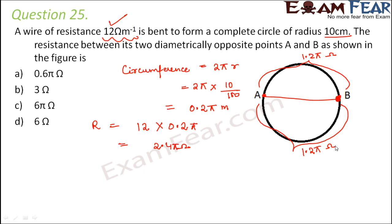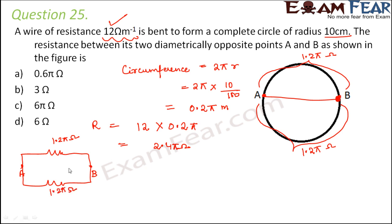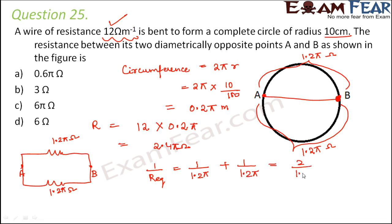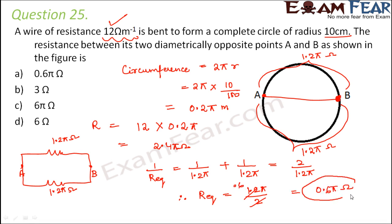The resistance of each half is 1.2π ohms. To calculate the equivalent resistance between A and B, we make a simple circuit: point A and point B with one resistance of 1.2π ohms and another of 1.2π ohms in parallel. So 1/R_equivalent = 1/1.2π + 1/1.2π = 2/1.2π, therefore R_equivalent = 1.2π/2 = 0.6π ohms. The correct option is A.